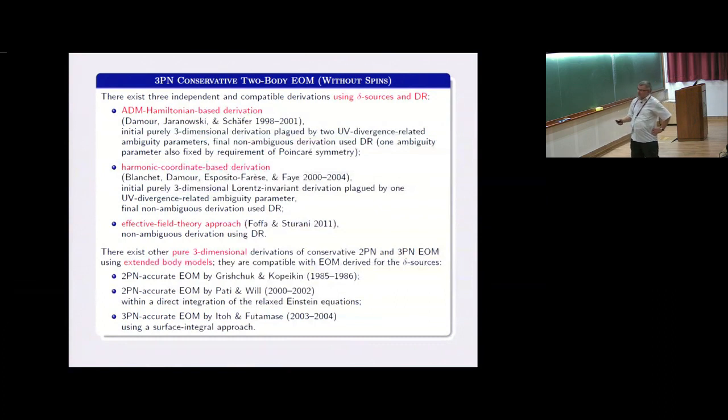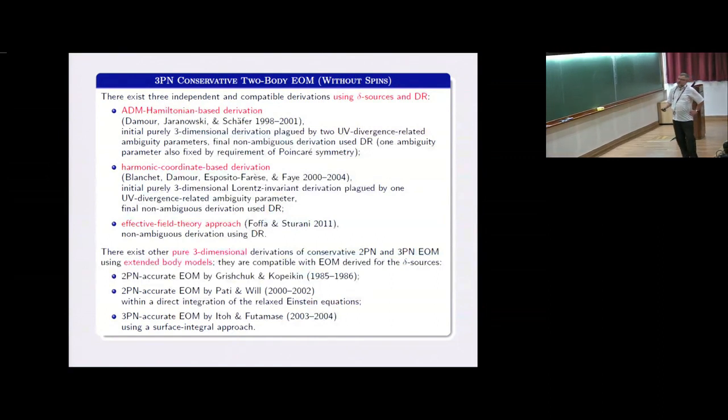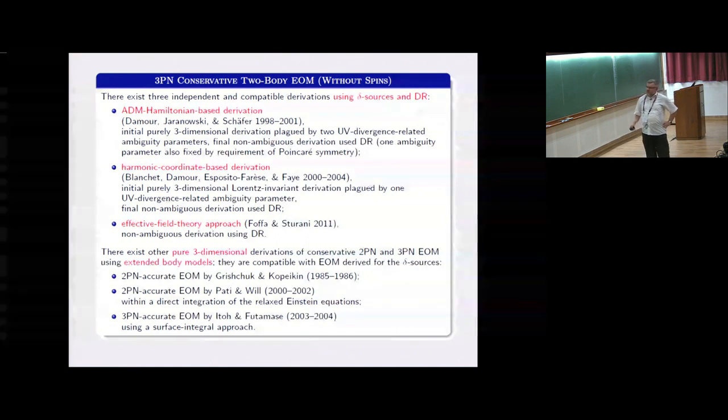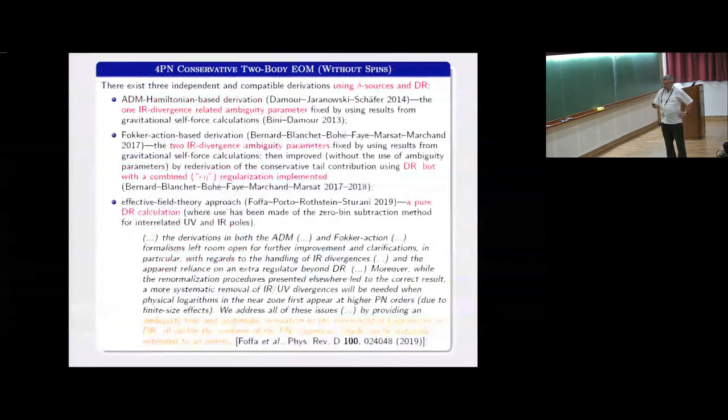3PN conservative two body equations of motion were derived independently by three groups using three different formalisms. But what is important is that there are also some derivations which use extended body models. One of them, made by Itoh and Futamase also with some contribution by Asada at the lower orders of approximation, they reach the third post-Newtonian order. This was very important and nice derivation made in the eighties by Grishchuk and Kopeikin. They just modeled the interacting bodies as spherical balls made of perfect fluids. More recent re-derivation of the second post-Newtonian equations of motion was by Pati and Will within their developed direct integration method, direct integration of the relaxed Einstein equations method.